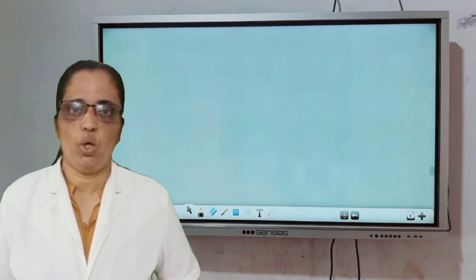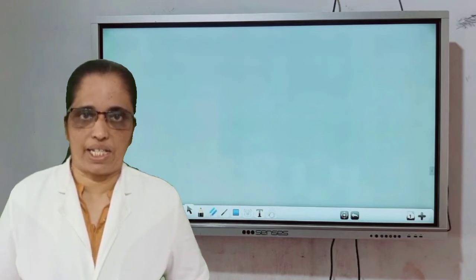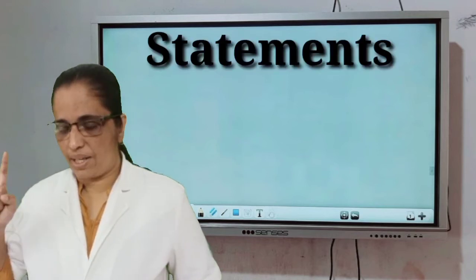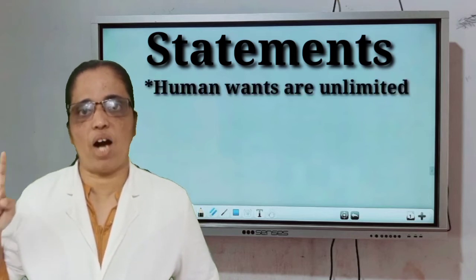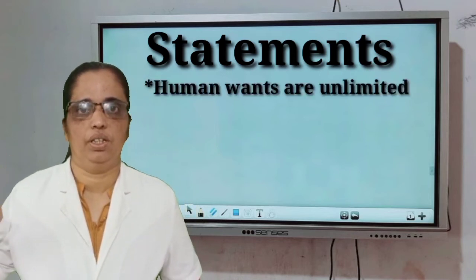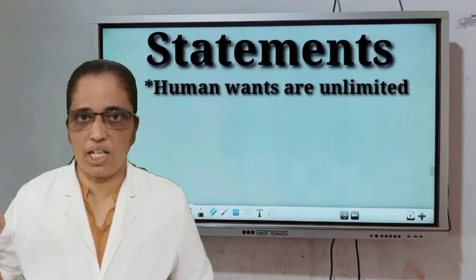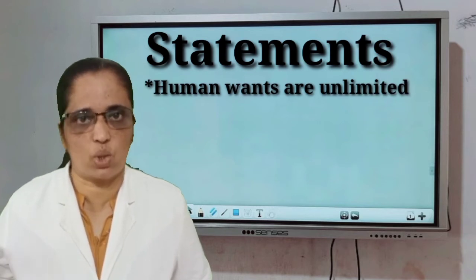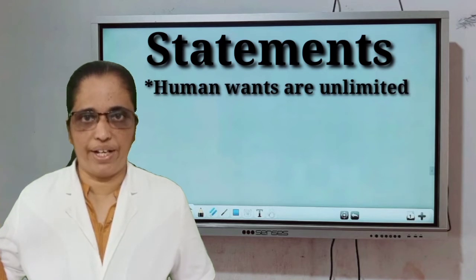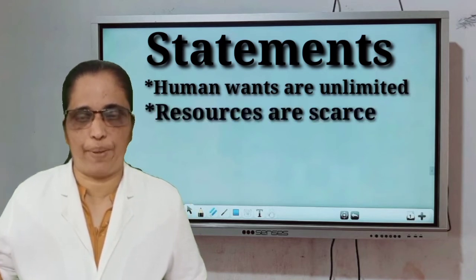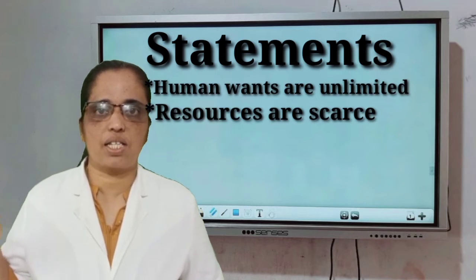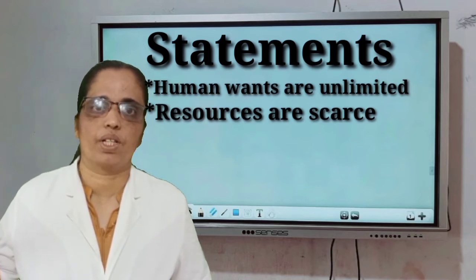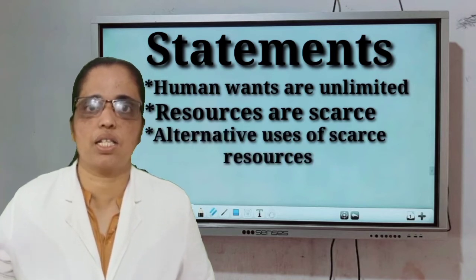We can analyze the various statements of the definition. The first statement is: human wants are unlimited — that is, we have many many wants to be satisfied. The second point is: resources to satisfy these unlimited wants are scarce or limited. And the third point is: alternative uses of the scarce resources.